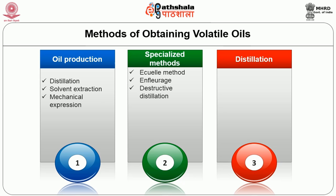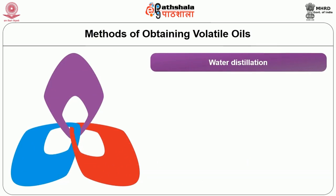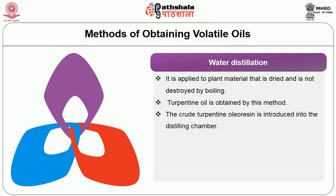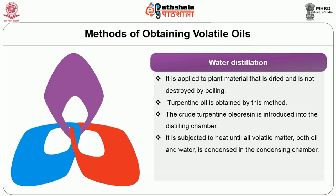There are 3 types of distillation used: water distillation, water and steam distillation, and direct steam distillation. Water distillation is applied to plant material that is dried and is not destroyed by boiling. Turpentine oil is obtained by this method. The crude turpentine oleoresin is introduced into the distilling chamber and subjected to heat until all volatile matter, both oil and water, is condensed in the condensing chamber. Turpentine oil is not affected by this amount of heat.